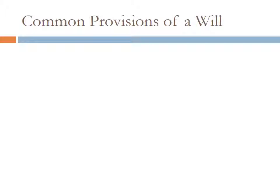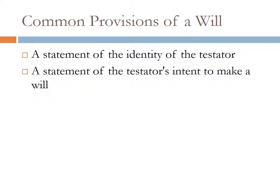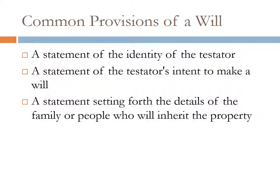Each will is broken down into some common provisions. These provisions are necessary and required for a valid will. The first is a statement of the identity of the testator — the person making the will. Next is a statement of the testator's intent to make a will, called testamentary intent, clearly stating that they want to dispose of their property upon their death. Next is a statement setting forth the details of the family or people who will inherit the property, usually called the heirs or heirs and assigns — essentially the people who get the property.